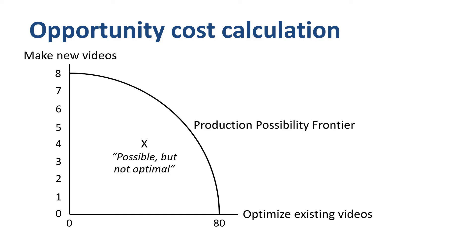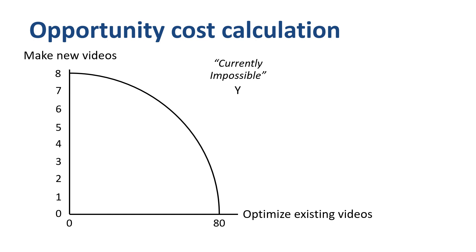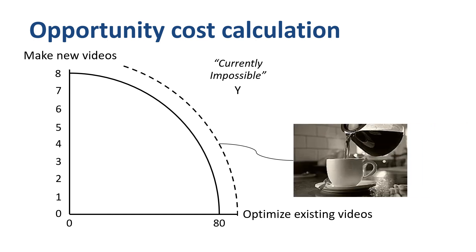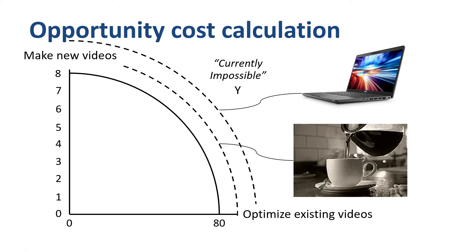What if you want to make 7 new videos and optimize 90 existing ones, all during one work week? As this point lies outside the production-possibility frontier, it is currently impossible, given the current state of technology and productivity. But don't let that hold you back — maybe coffee and a new laptop can help you push the production-possibility frontier ever further outward. Each of them helps you to be more productive and push the limit.